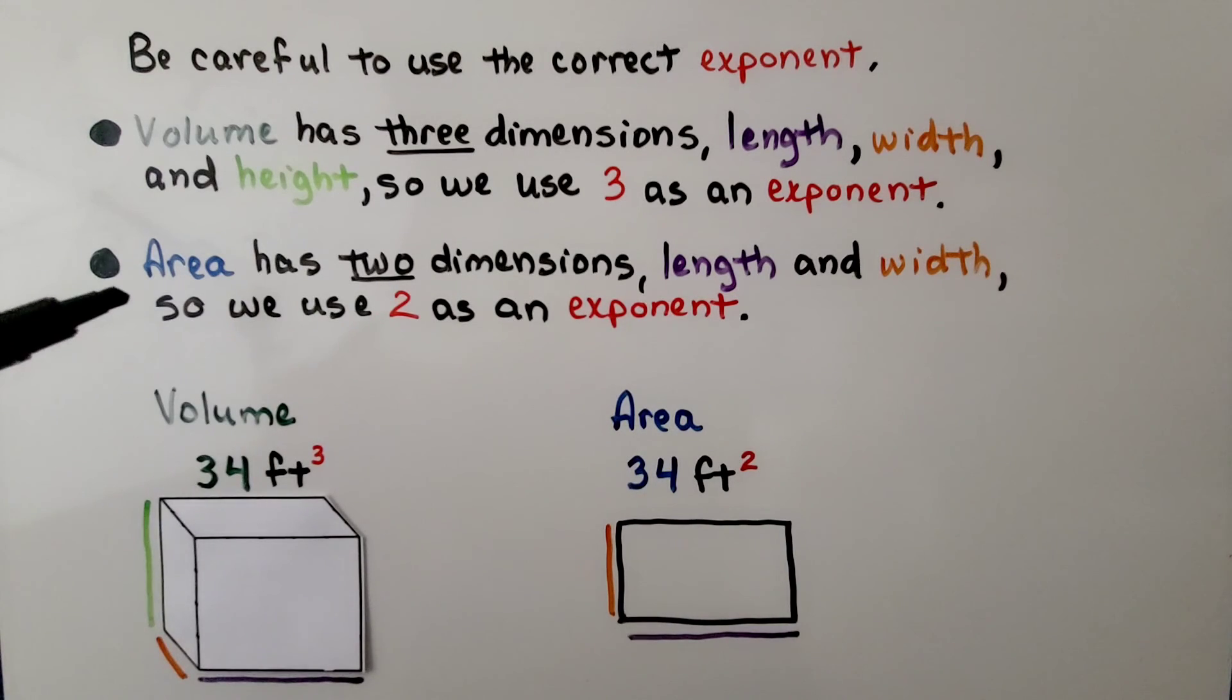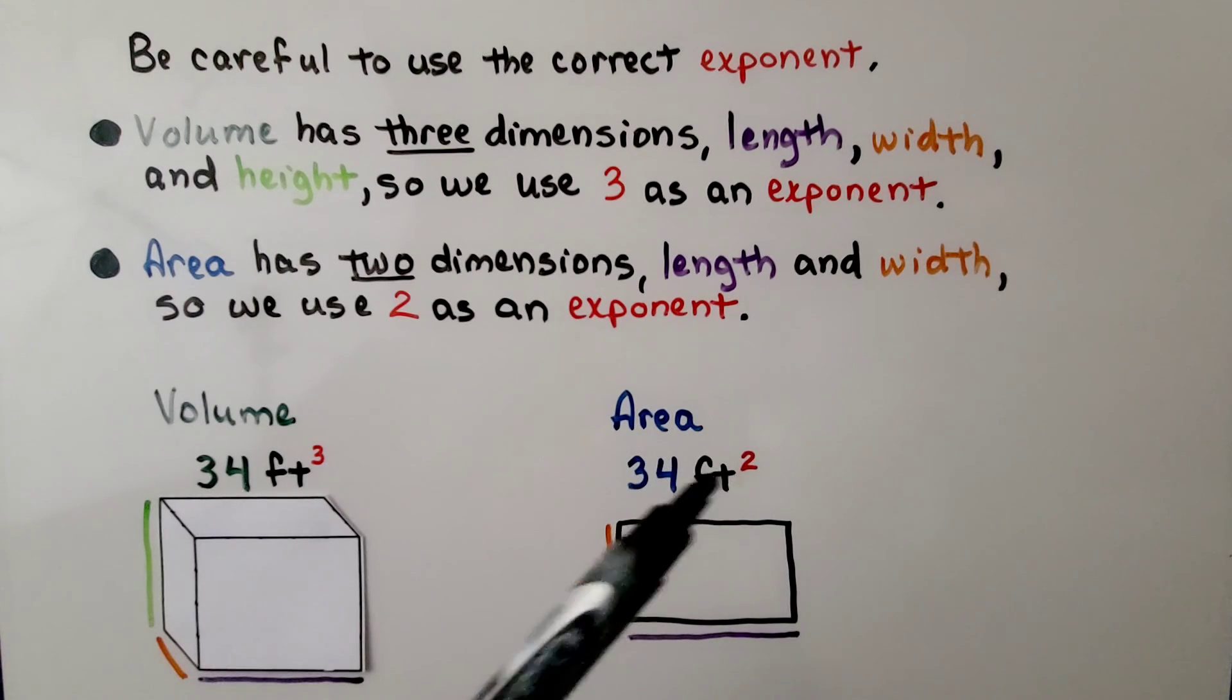Area has two dimensions, length and width, so we use two as an exponent.